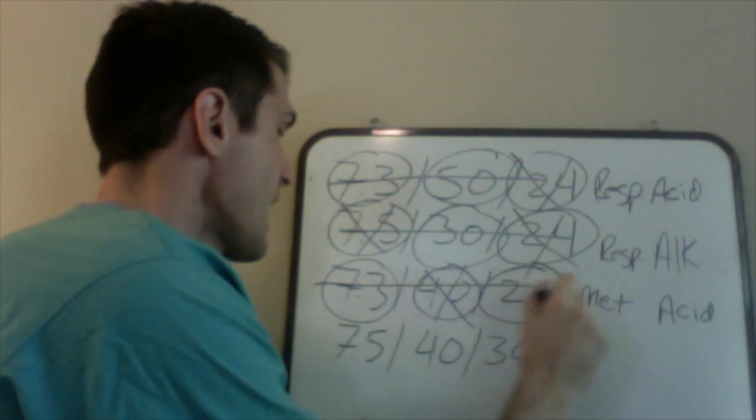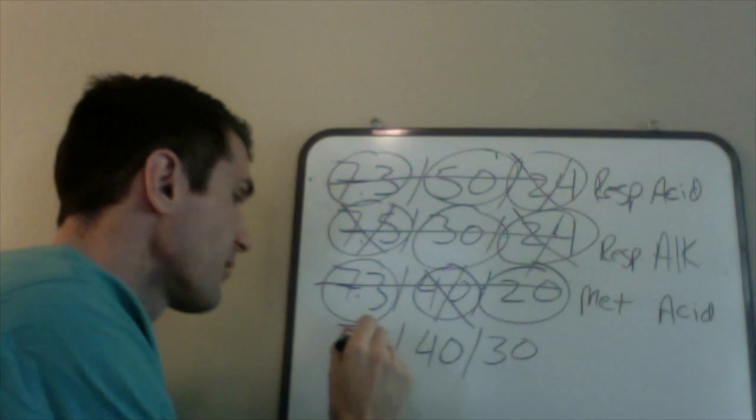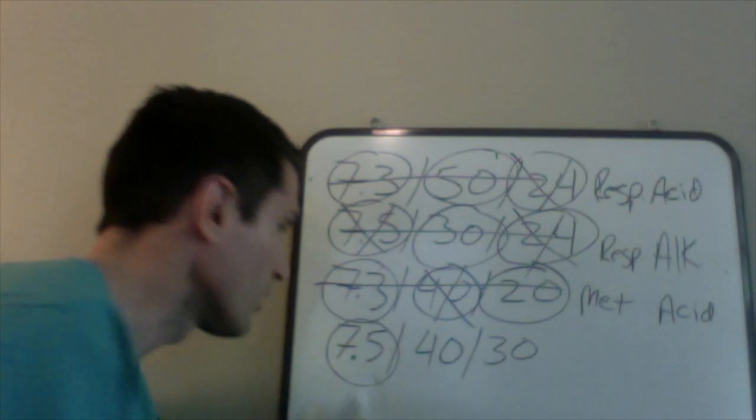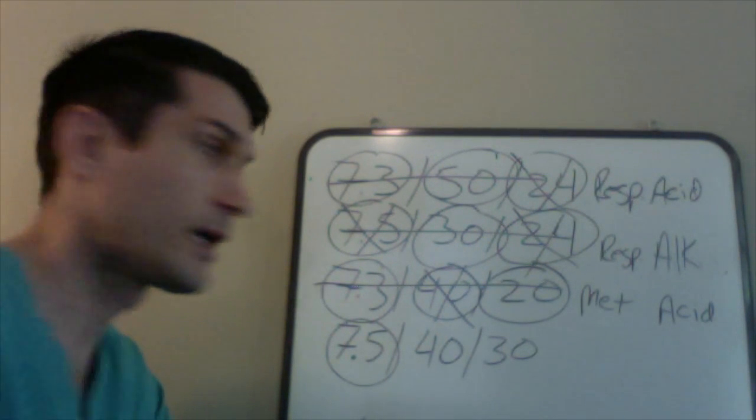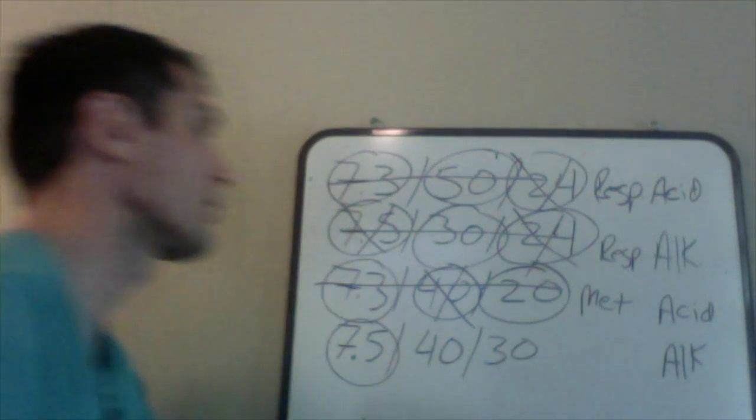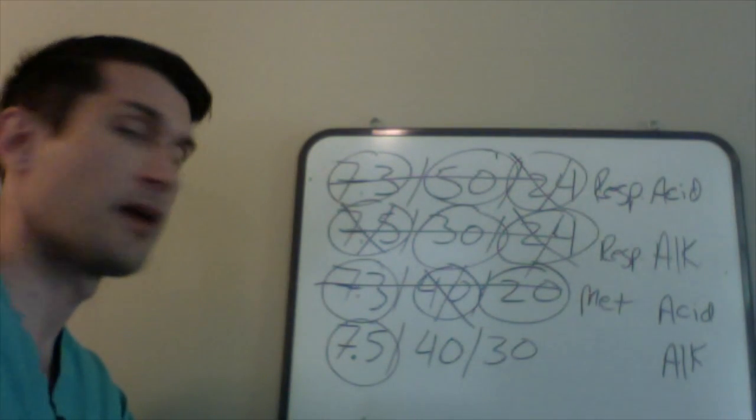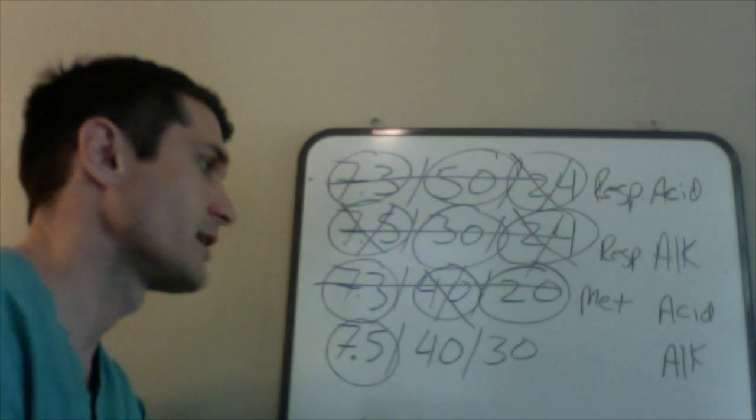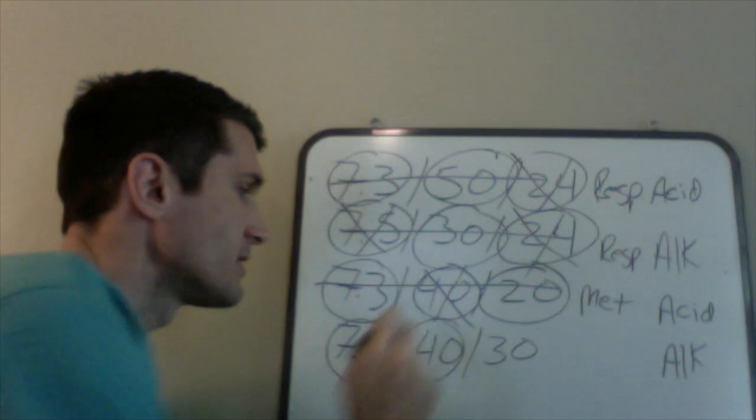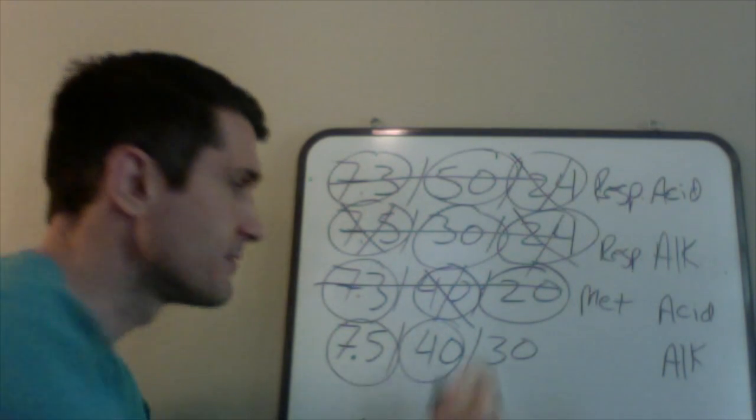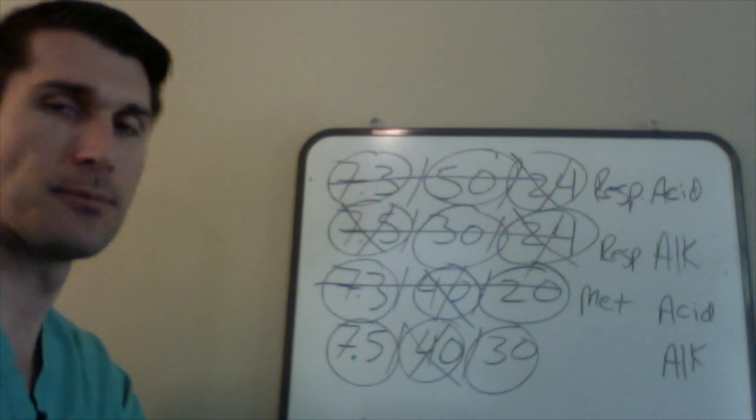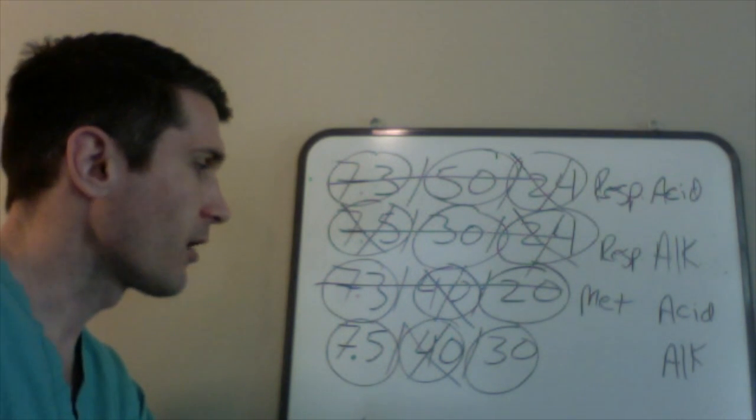Let's look at our last one here. We have a pH of 7.5, by this point you guys should be catching on here, this is an alkalotic situation. So we're going to look, first we're going to write down what it is, alkalotic, and then we're going to look at our parameters, these two parameters, and see which one's behaving, which one is deranged, which one's acting differently and in which direction is it acting. So we've got our CO2 which is 40, that is very normal, so we're going to cross that one out. We're going to circle this one and look at that, what's going on with that one. That is the bicarb and the bicarb normal range is 22 to 26, so there's too much of it there.